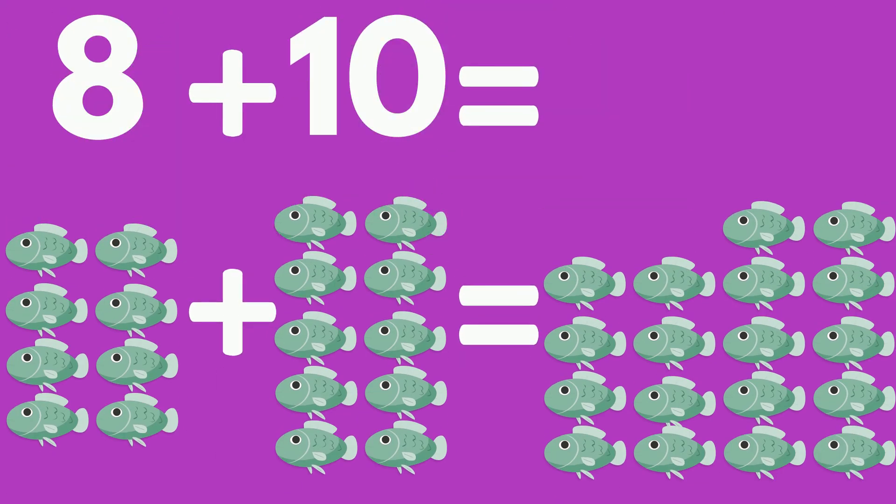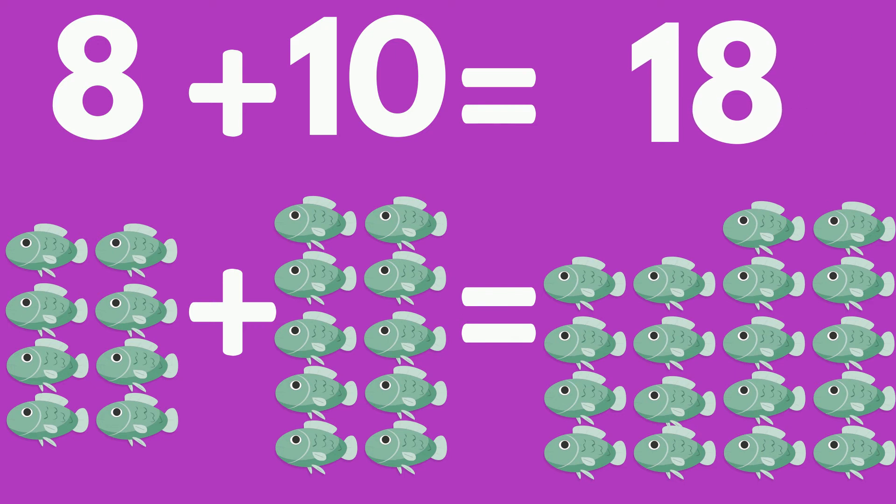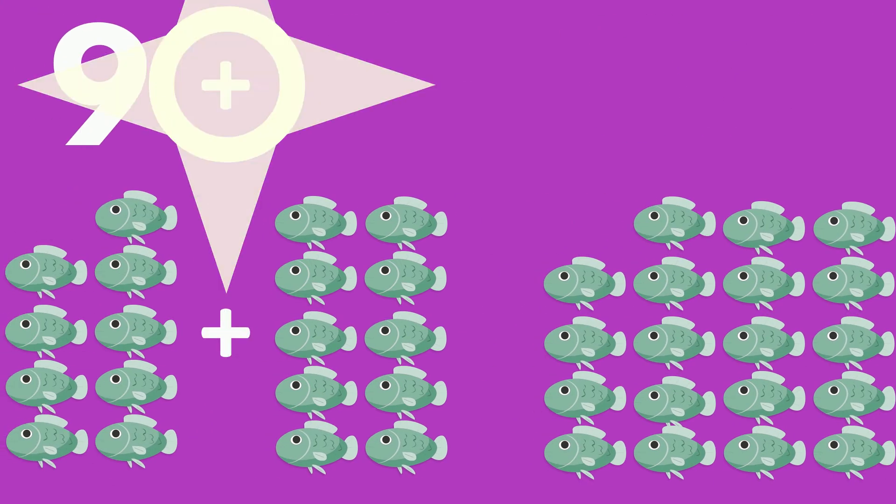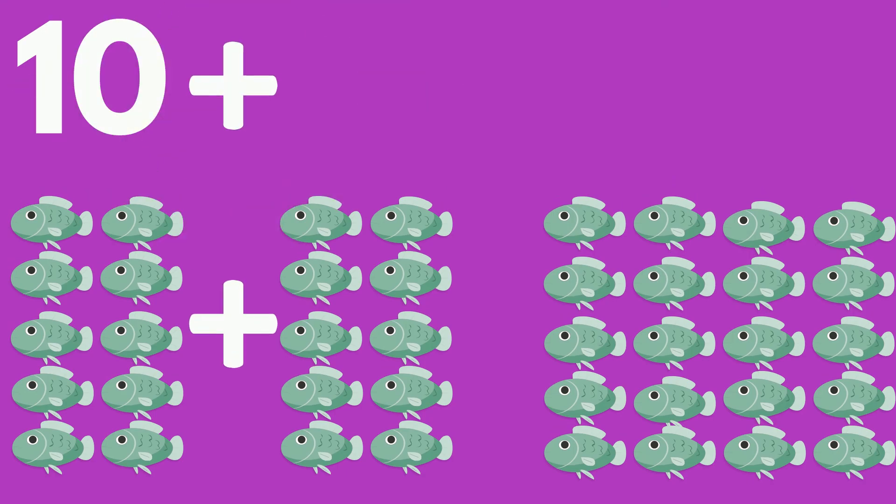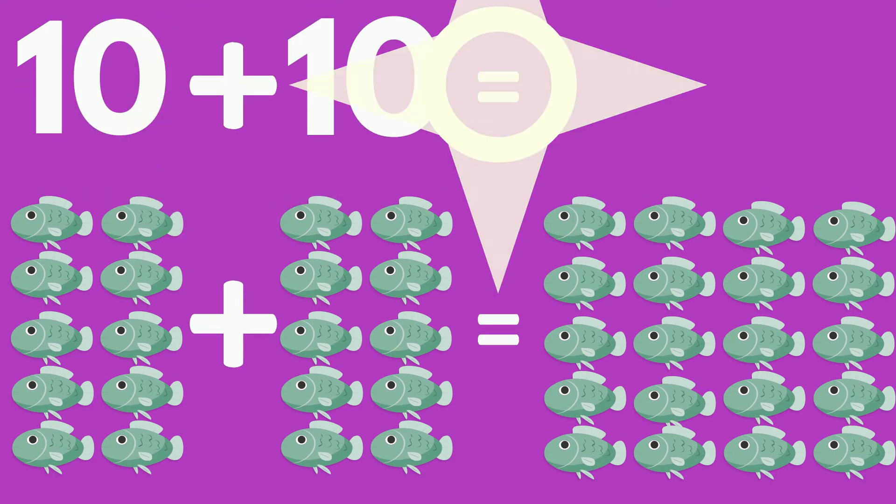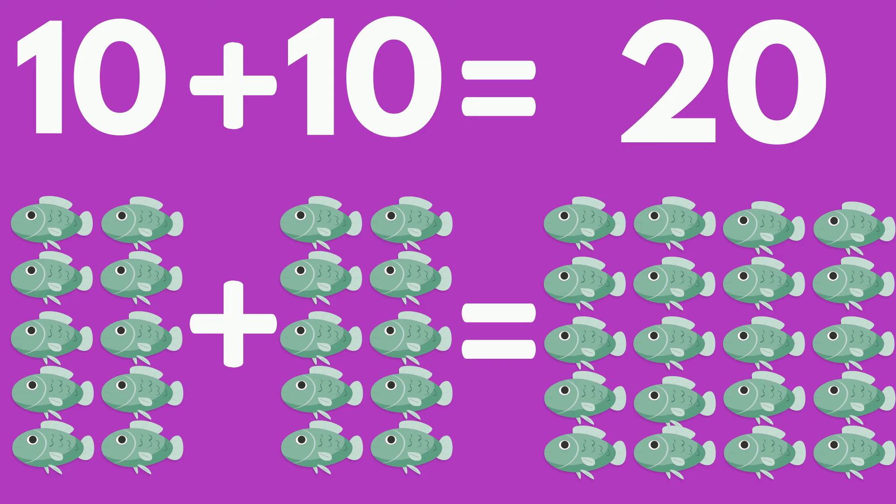9 fish plus 10 fish equals 19 fish. 10 fish plus 10 fish equals 20 fish. Great job.